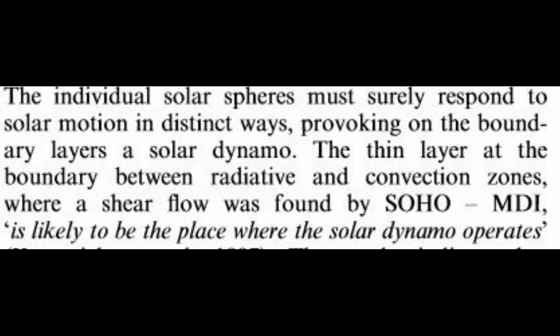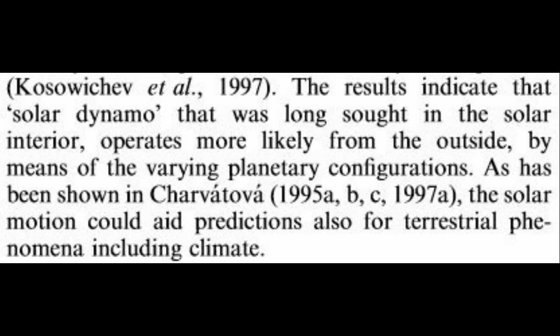And then they stuck this paragraph, this is the very end, the last paragraph of the conclusion. This is great. It really doesn't have anything to do with the rest of the paper, but fits in completely to current theories. So the individual solar spheres must surely respond to solar motion in distinct ways, provoking on the boundary layers a solar dynamo. The thin layer at the boundary between radiative and convective zones where a shear flow has been found by the satellites is likely to be the place where the solar dynamo operates. The results indicate that solar dynamo that was long sought in the solar interior operates more likely from the outside by means of varying planetary configurations. The solar motion could aid predictions also for terrestrial phenomenon, including climate. Last paragraph, just threw it in, wasn't mentioned anywhere else in the paper, but I thought that was very interesting.